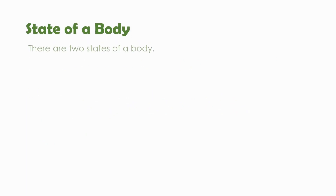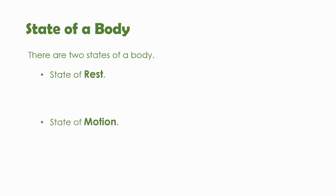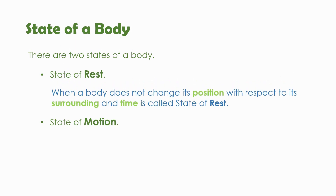First, we will discuss the state of body. There are two states: rest and motion. The state of rest means when a body does not change its position with respect to its surrounding and time. Position, surrounding, and time are the characteristics of kinematics that are used to define any term associated with kinematics.